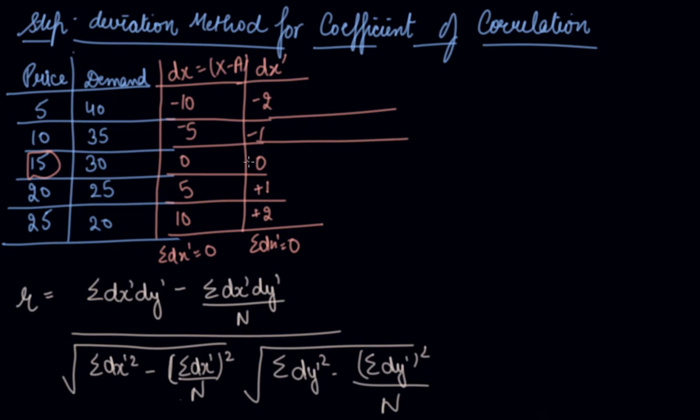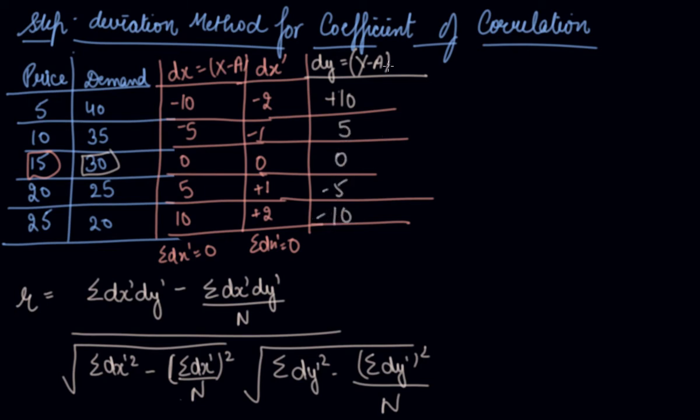Now we will find out in the same way dy which is y minus assumed mean y is 30. So 40 minus 30 is plus 10, 40 minus 30, then 5, 0, 5 and 10. And dy' dash we will find out by taking the common factor. 5 is the common factor again. 2, 1, 0, minus 1, minus 2. Summation dy' dash is 0.